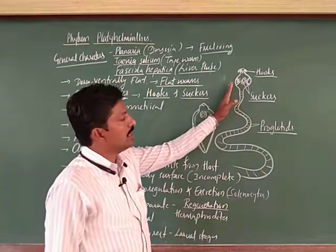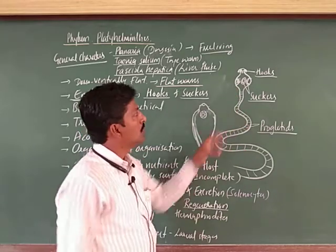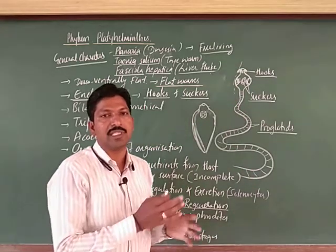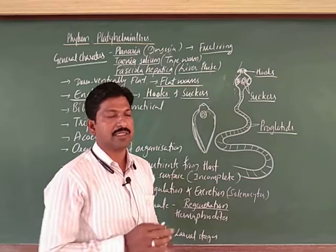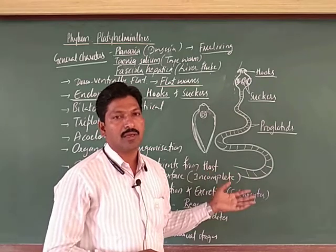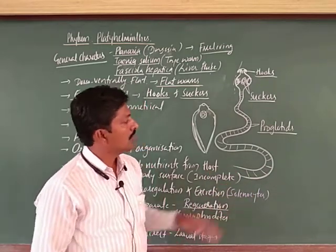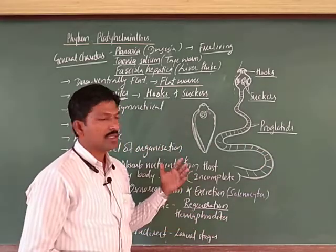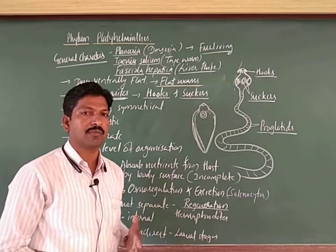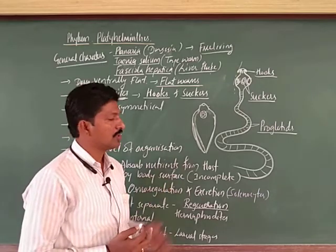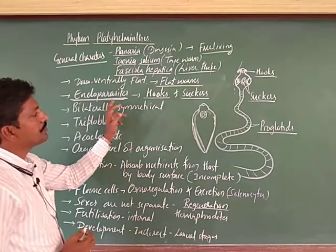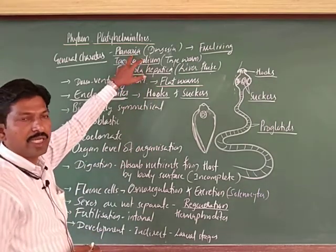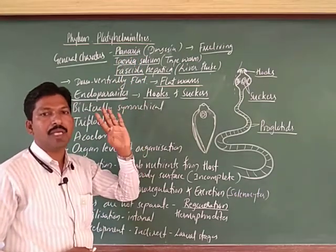Platyhelminthes members are also endoparasites with specialized structures called hooks and suckers. These animals are present in the intestine, and the hooks hold the intestinal tissue so they do not easily shed off. Sometimes a proglottis may be cut and removed as a biological process, and there is also a regeneration power — the lost part may regrow. Hooks and suckers are special features of endoparasites but are not observed in Planaria, as it is free-living.